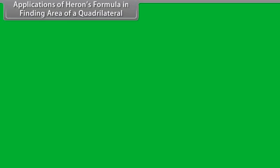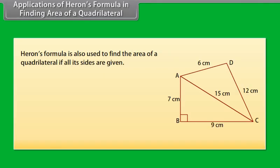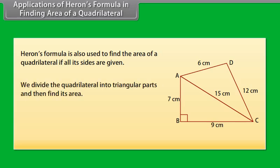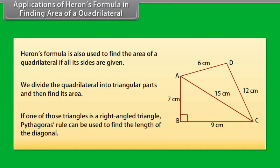Applications of Heron's formula in finding the area of a quadrilateral. Heron's formula is also used to find the area of a quadrilateral if all its sides are given. For that, we divide the quadrilateral into triangular parts and then find its area. If one of those triangles is a right-angled triangle, Pythagoras' rule can be used to find the length of the diagonal.